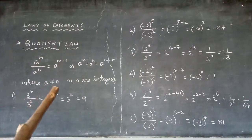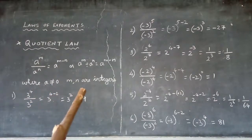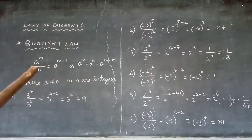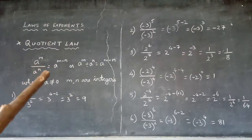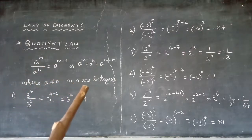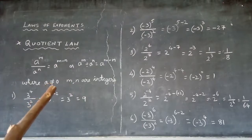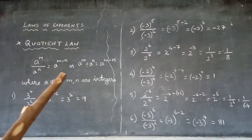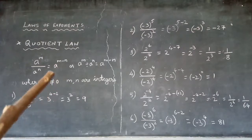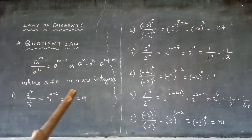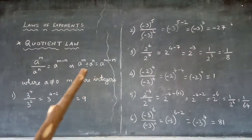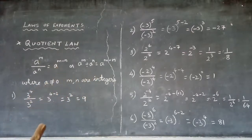Here, a should not be equal to 0, and m and n must be integers. If a is 0, we cannot write it in this form. So the formula a^(m-n) applies when a ≠ 0 and m, n are integers. Now we will see some examples.